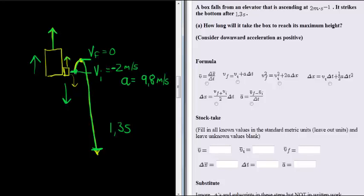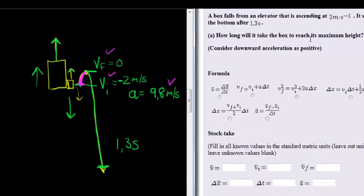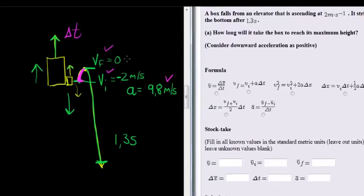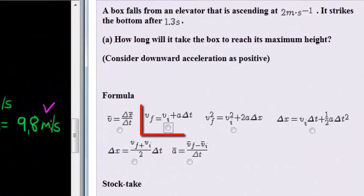So just considering the first part of this question, the first short journey, what do we know during this journey? We know initial velocity, final velocity, constant acceleration, and we want to calculate how long it takes the box to reach this height. So we want to calculate delta t. With the values that we do have, we will need this formula.